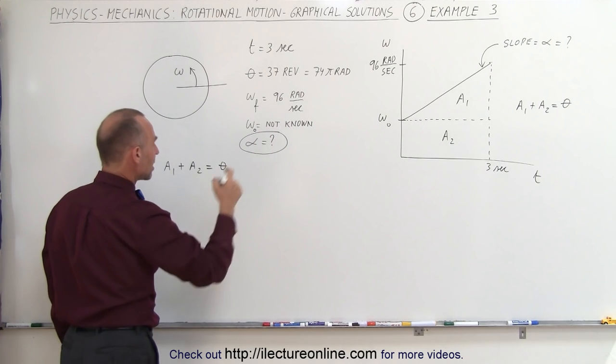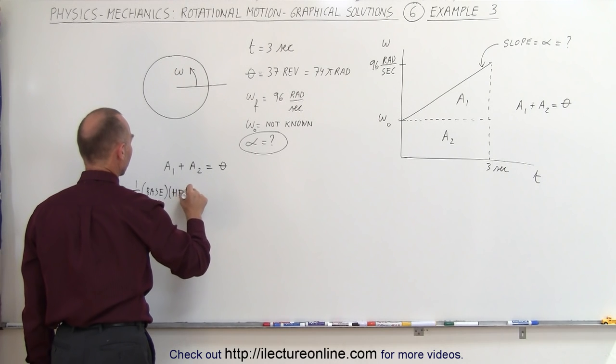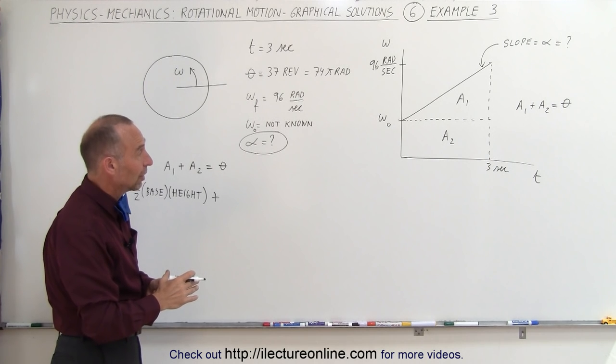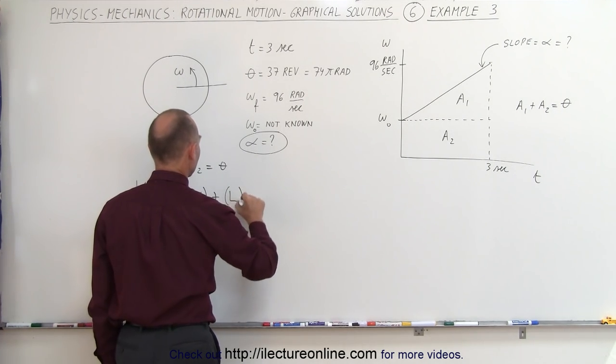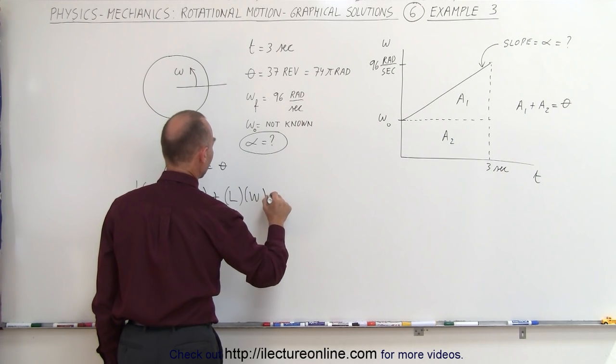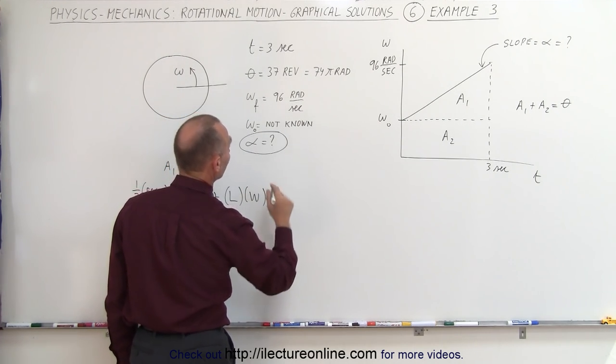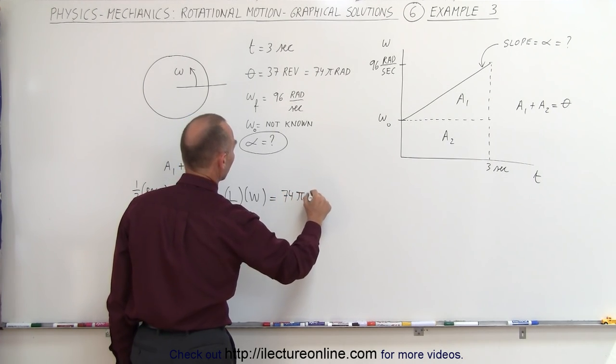So here what we can write is we can say A₁ plus A₂ equals theta and A₁ is going to be the area of that triangle. That means it's one half the base times the height of that triangle plus area 2 which is a rectangle and there we're simply going to multiply the length times the width. So it's going to be length times width for the rectangle and that should add up to theta which is 37 revolutions or 74π radians.